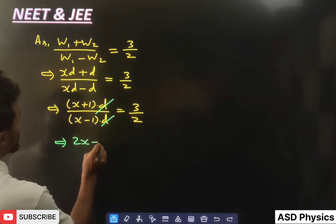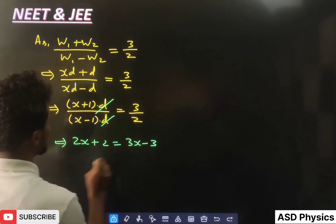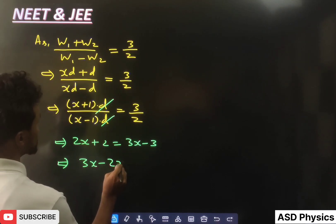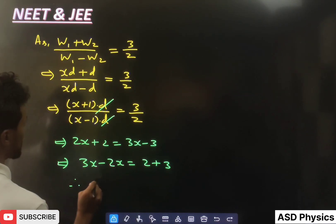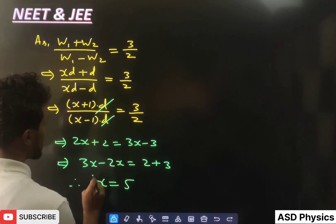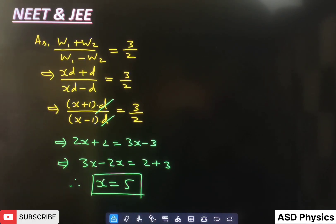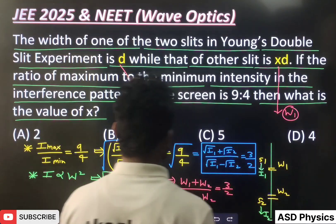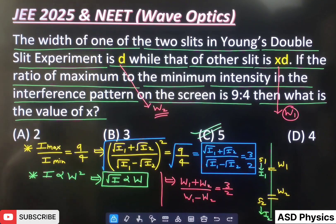The 'd' cancels out. Cross-multiplying: 2(x + 1) = 3(x − 1), giving 2x + 2 = 3x − 3. Rearranging: 3x − 2x = 2 + 3, so x = 5. The value of x is 5, which corresponds to option C.